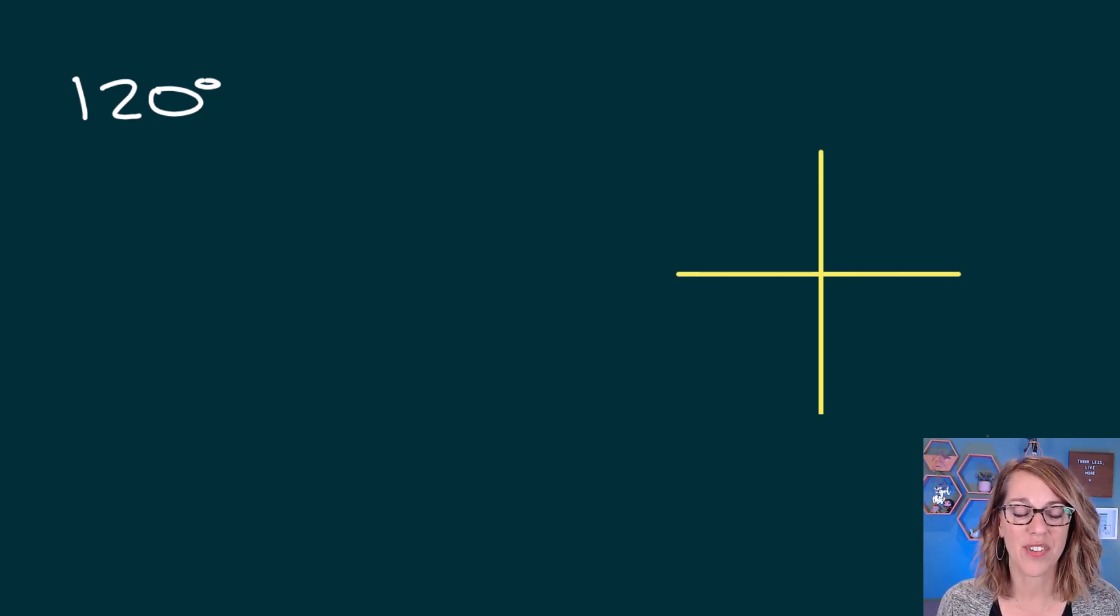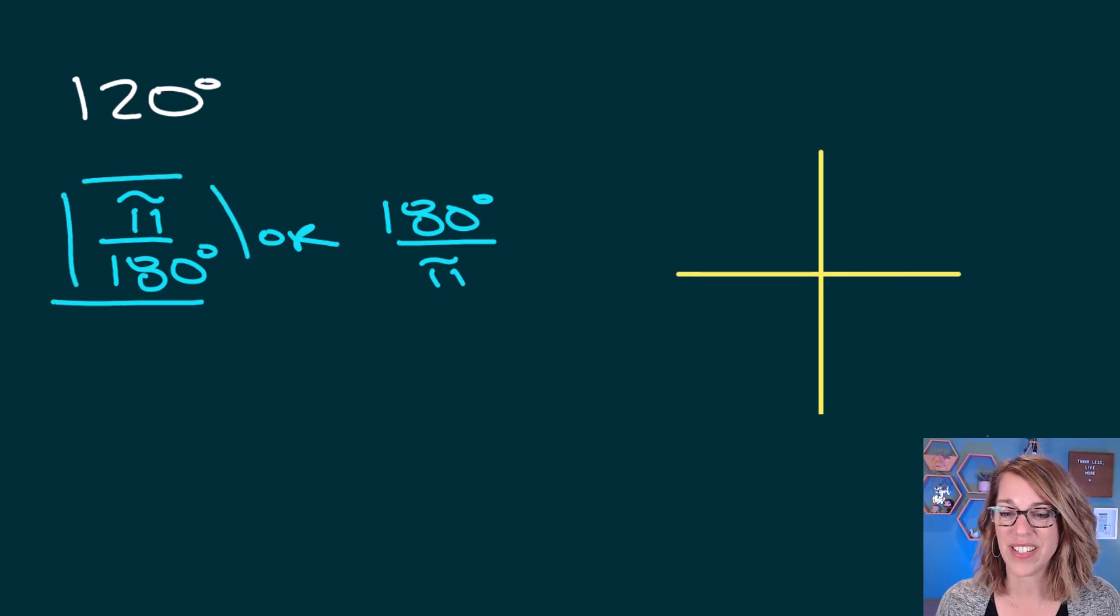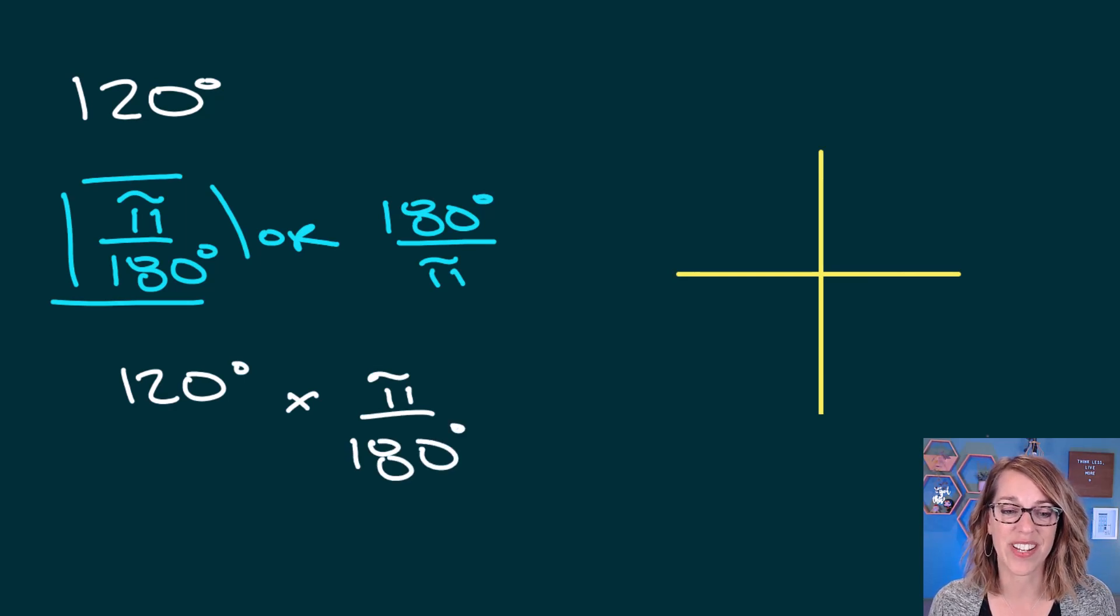And I've got those conversion factors. I know that π and 180 is the same. So I can either use this conversion factor because that's equal to one, or I can use this conversion factor because that one is equal to one. Which one would you use? I want to cancel degrees. So I'm definitely going to use this one. So I'm going to go ahead and take 120 degrees, and I'm going to multiply that by π divided by 180 degrees.